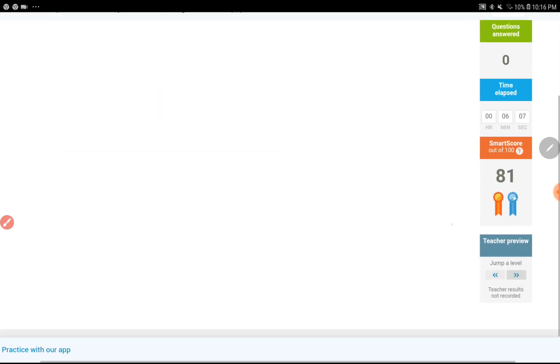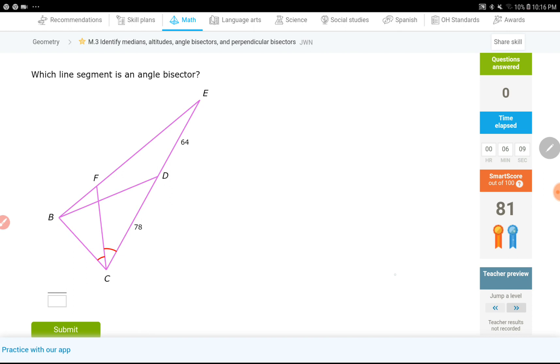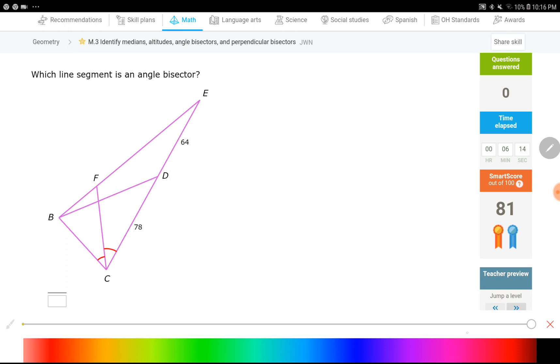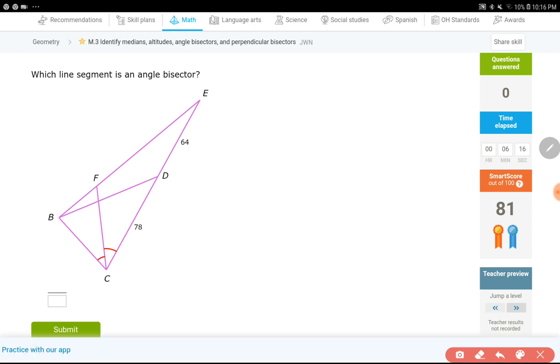probably the last question. Okay, let's say this is going to be the last one. Each line segment is an angle bisector. So if I'm talking about an angle bisector, I need one angle to be cut in half. And I see that angle over here. That's my angle. And the segment that cuts this angle in half is called FC, or CF. The order doesn't matter. You can either put segment FC, or segment CF. Both would be correct.